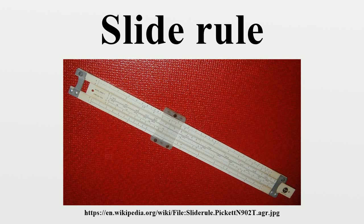As there are single-decade, double-decade, and triple-decade scales, to compute a square, locate x on the D scale and read its square on the A scale. Inverting this process allows square roots to be found, and similarly for the powers 3, 1/3, 2/3, and 3/2. Care must be taken when the base x is found in more than one place on its scale. For instance, there are two nines on the A scale; to find the square root of 9, use the first one — the second one gives the square root of 90.